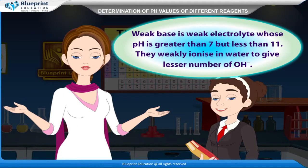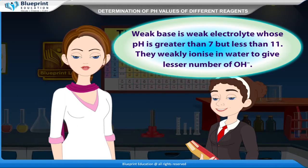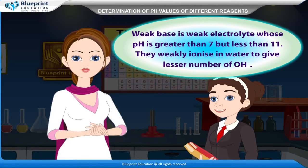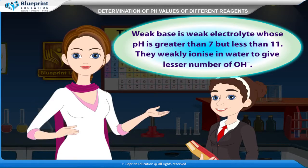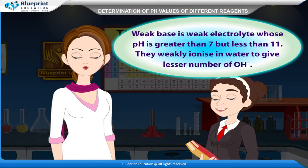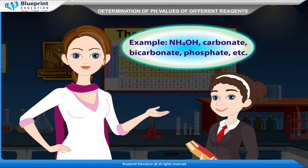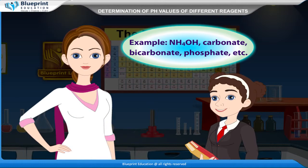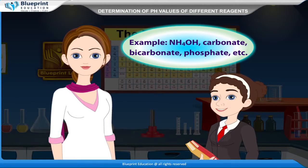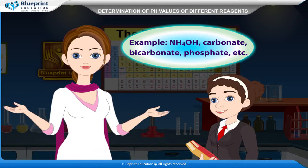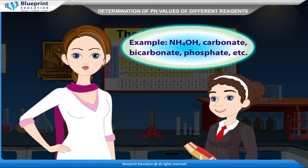A weak base is a weak electrolyte with pH greater than 7 but less than 11. They weakly ionize in water to give a lesser number of OH⁻ ions. Examples include NH4OH, carbonate, bicarbonate, phosphate, etc.